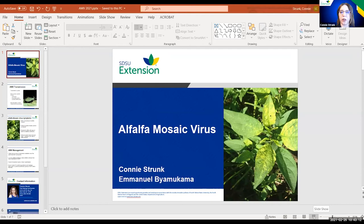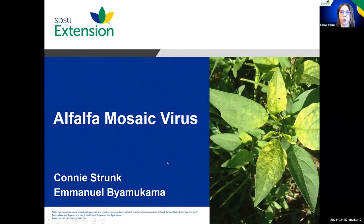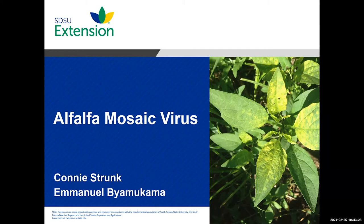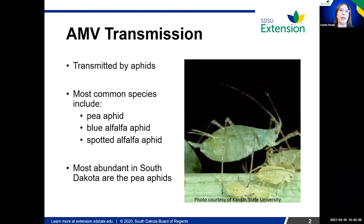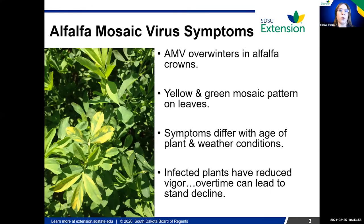Connie is going to very briefly talk about the most common virus in alfalfa: alfalfa mosaic virus (AMV). This is a concern because AMV can also infect soybeans. AMV is transmitted by many different aphid species — most commonly the pea aphid, blue alfalfa aphid, and spotted alfalfa aphid — with pea aphids being the most abundant transmitter seen here in South Dakota.